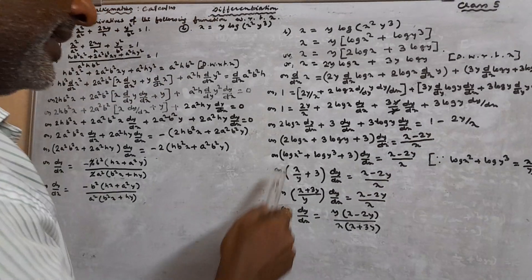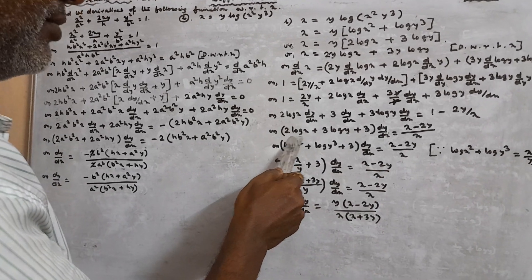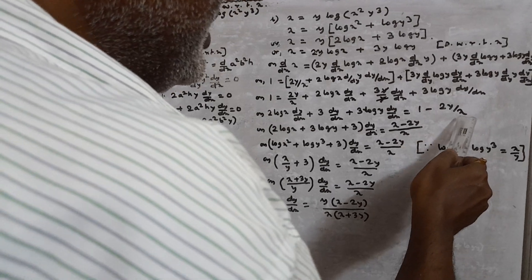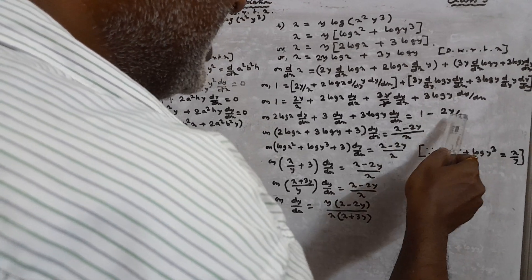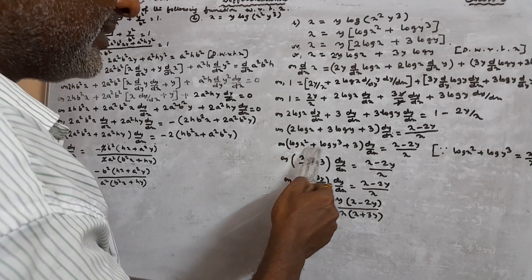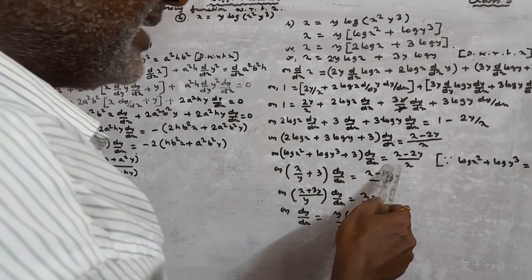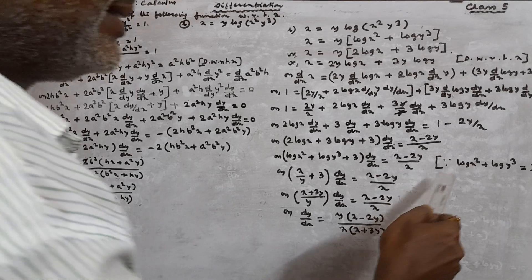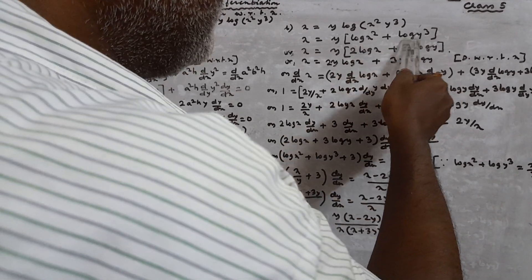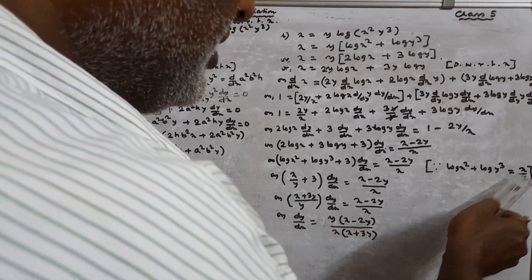Taking all dY/dX terms to one side: dY/dX · (2 log X + 3 log Y + 3) = 1 − 2Y/X. Taking LCM X on the right: = (X − 2Y)/X. Now 2 log X = log X² and 3 log Y = log Y³, so 2 log X + 3 log Y = log X² + log Y³. Since X = Y · log(X²Y³), we know log X² + log Y³ = X/Y.